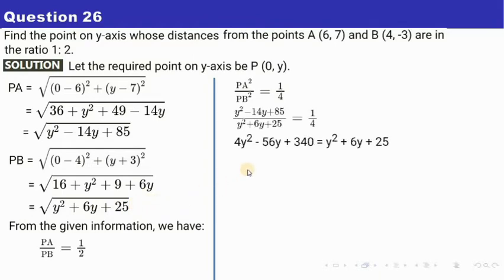So from here just do cross multiplication. So 4 into y² is 4y². So similarly multiply all this with 4, you will get this much and from here you will arrive at this particular equation. Solve this. So I have skipped the step, you have to do this, do the steps otherwise you will lose marks. So from here you will arrive at this.